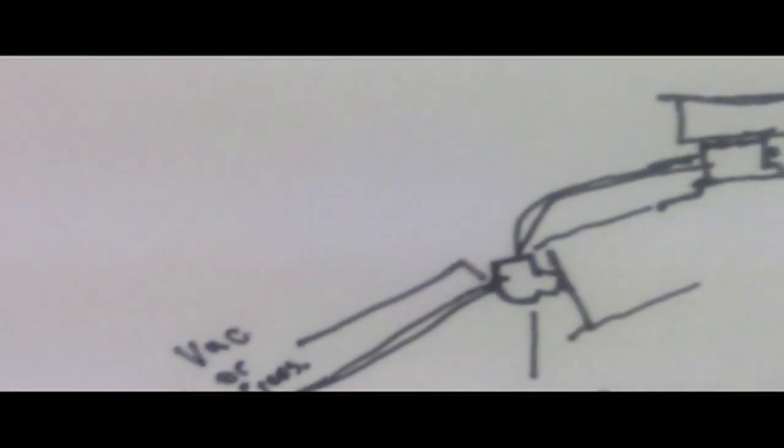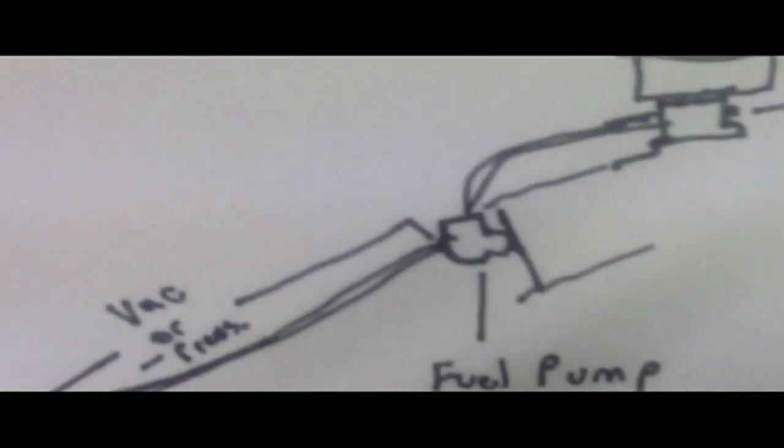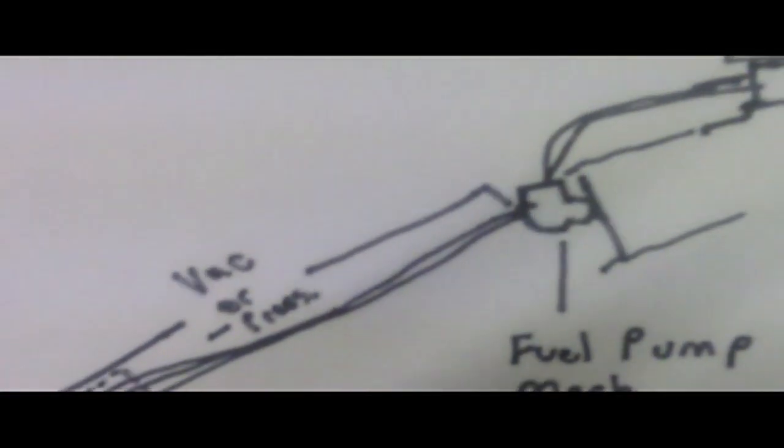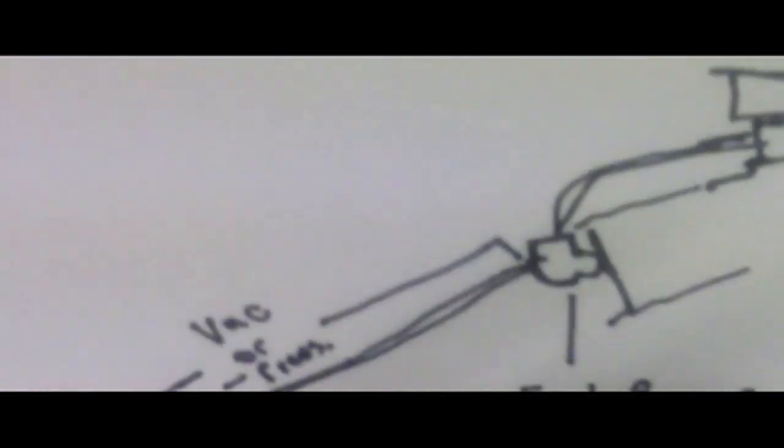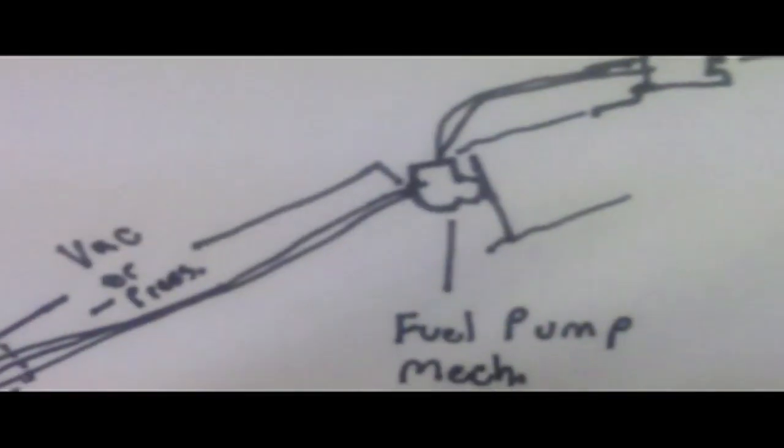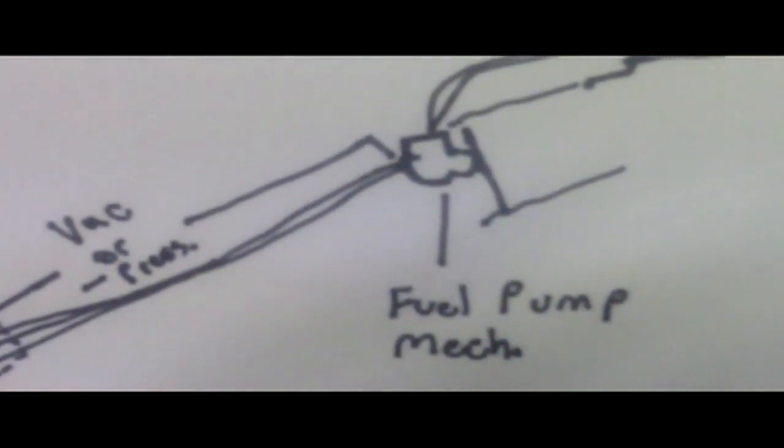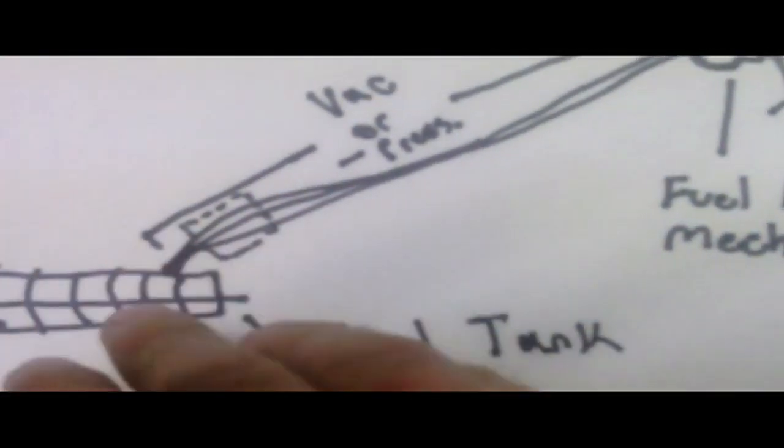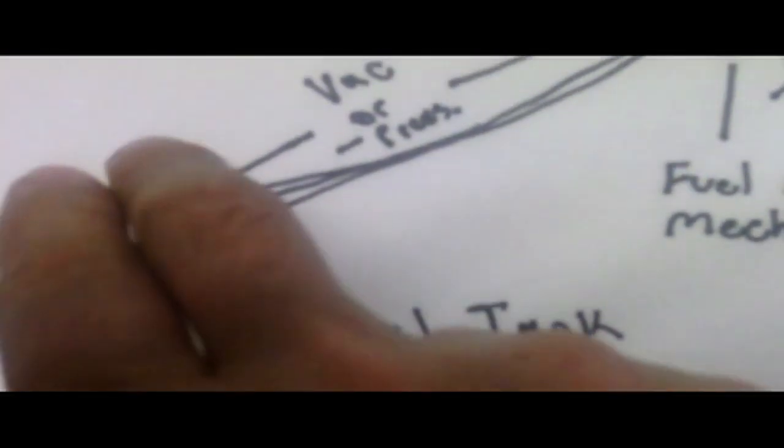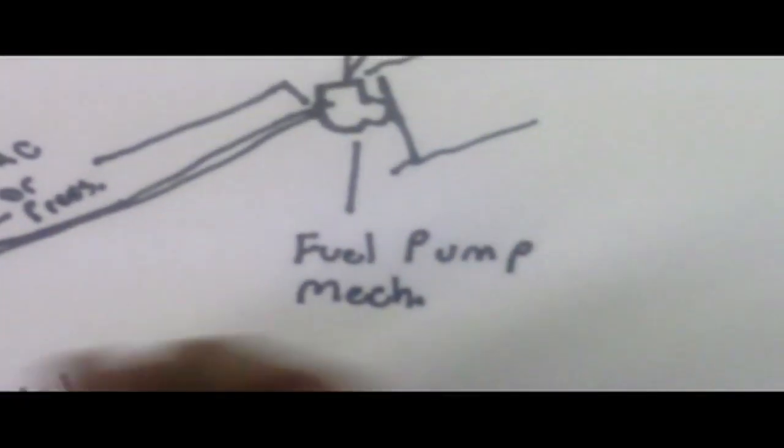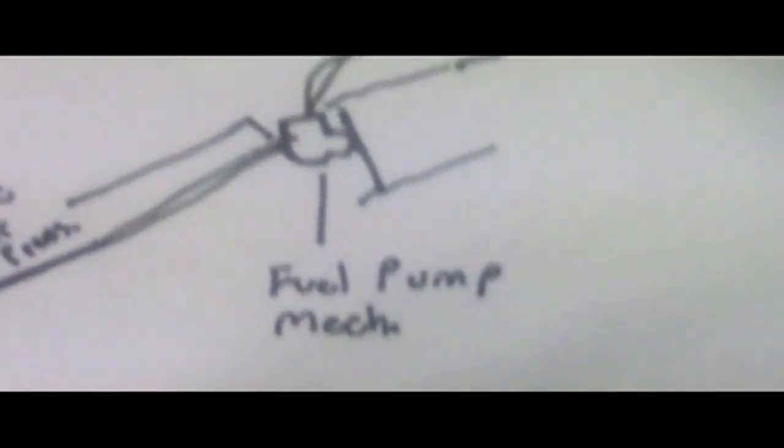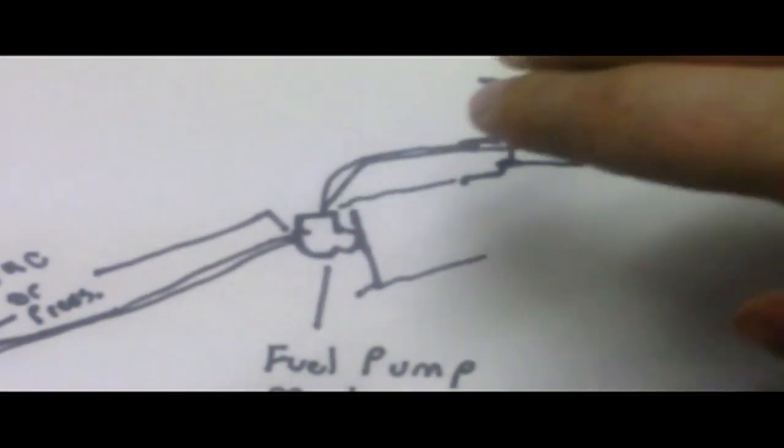Now, your biggest heat sources, like I said, are the side of the engine and the exhaust manifold. You probably won't be able to get too far away from the side of the engine because that's where your fuel pump is located. But, things that you can do, would include routing your fuel lines along the frame rail.